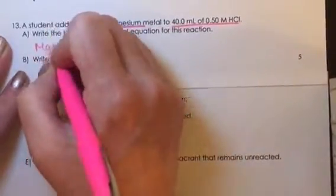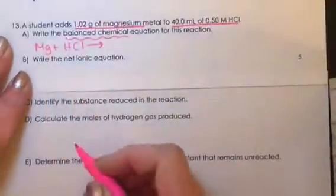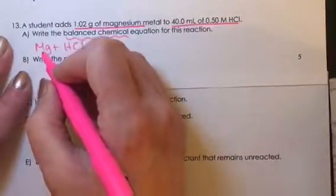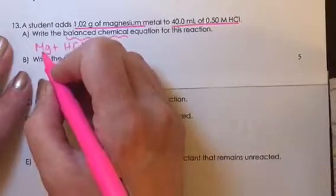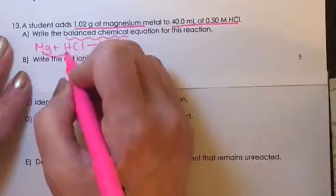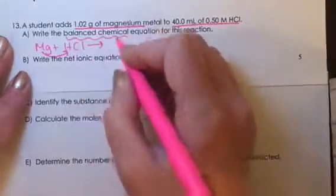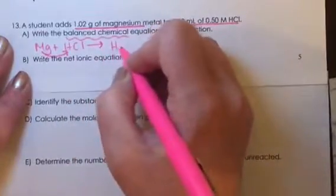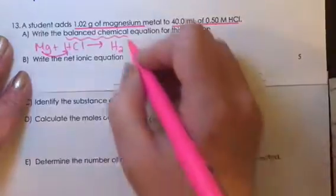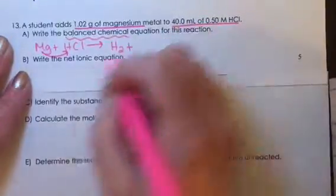So we have solid magnesium plus hydrochloric acid. This is a single replacement reaction, and the magnesium, which has a positive charge as an ion, is going to remove the hydrogen, which is the positive ion in the compound. So the hydrogen is removed, and we know hydrogen is a diatomic element, so it will produce hydrogen gas.